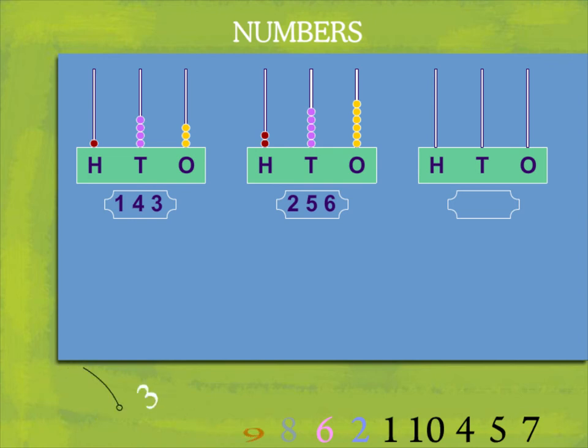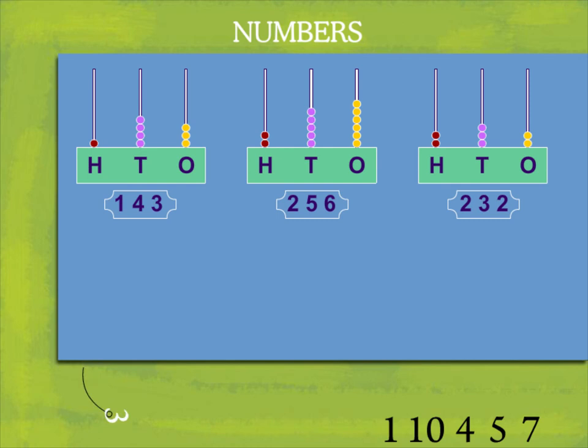The third number is two ones, three tenths and two hundredths. It is two hundred and thirty two.